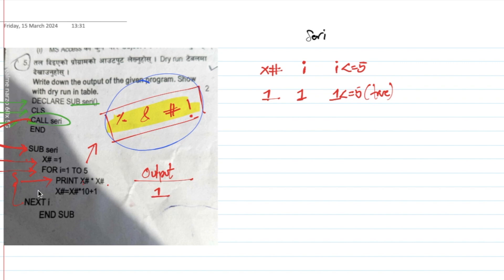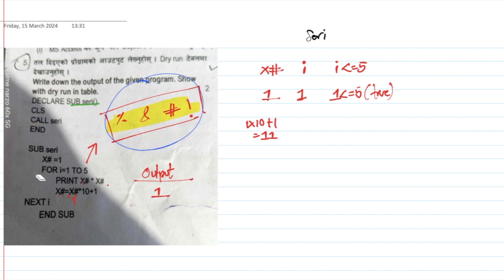Then xx equals to xs into 10 plus 1. So xx is calculated as xs into 10 plus 1. That is 1 into 10 plus 1 equals 11. So xx becomes 11. Next, xx will be updated.